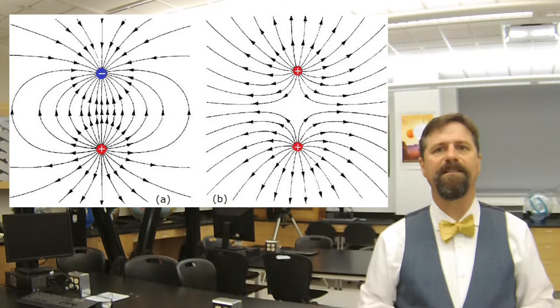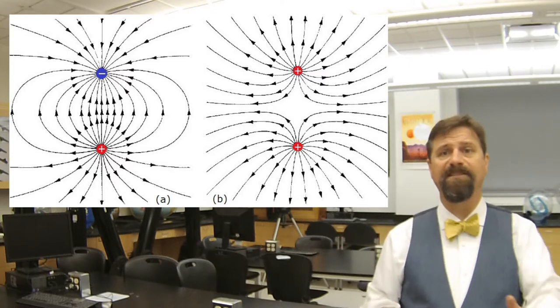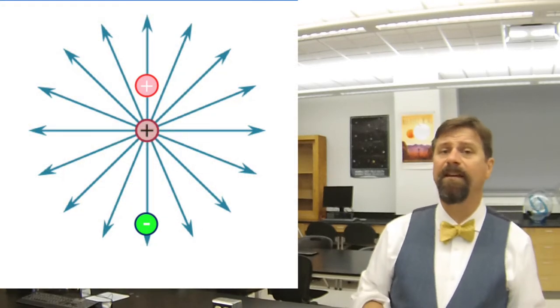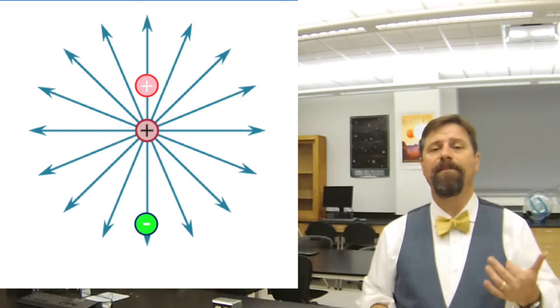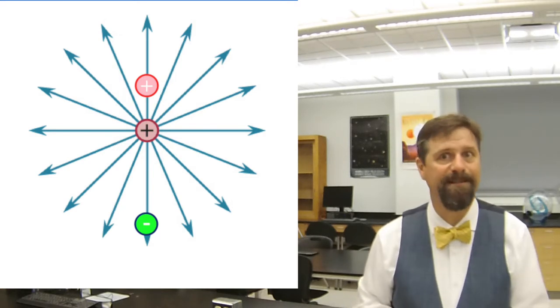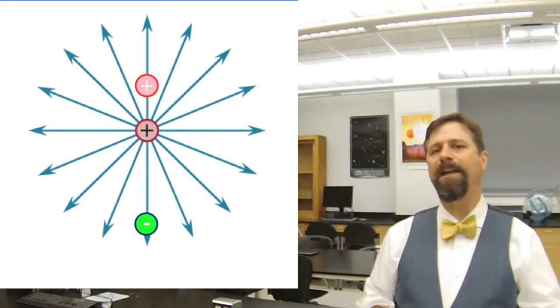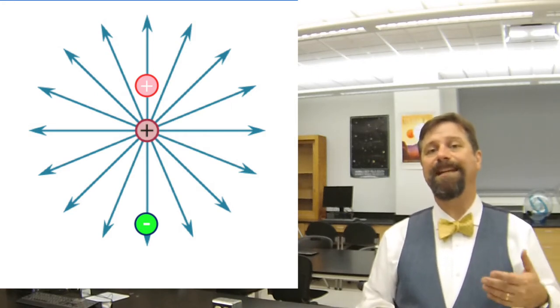The electric field doesn't have a limit — it just keeps going. There's no limit. Its intensity drops off as the distance squared, but there's no real limit where it says, now I'm done and it stops. So a plus charge sitting there has what we call field lines. If you place another plus charge at a location on a field line, the total number or density of field lines at that location determines how much it gets pushed away.